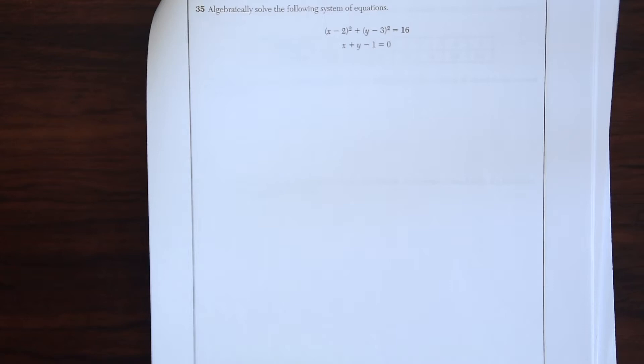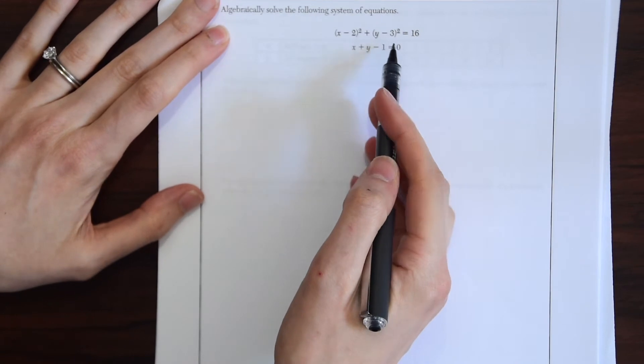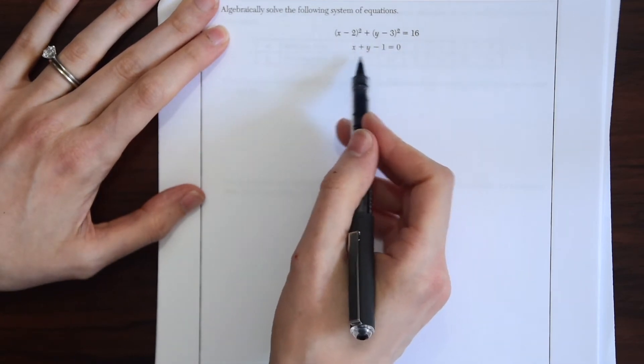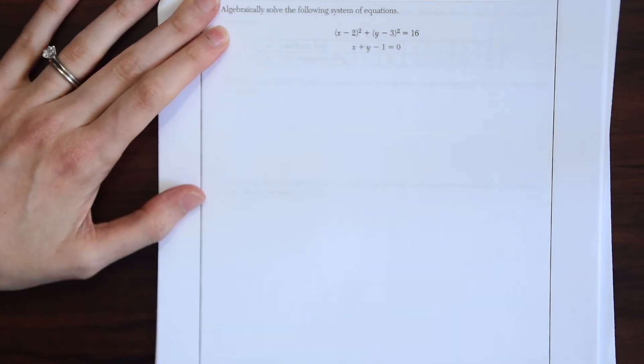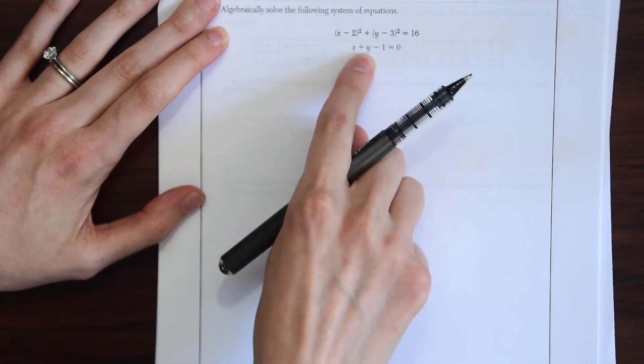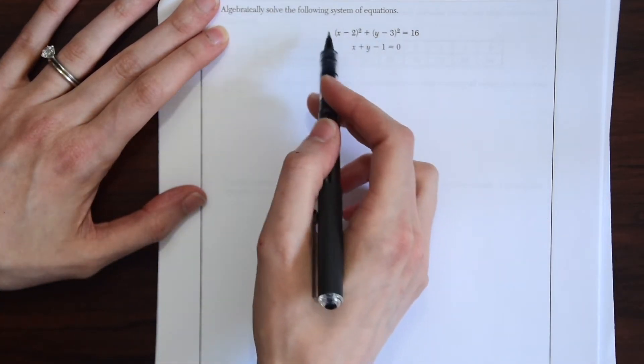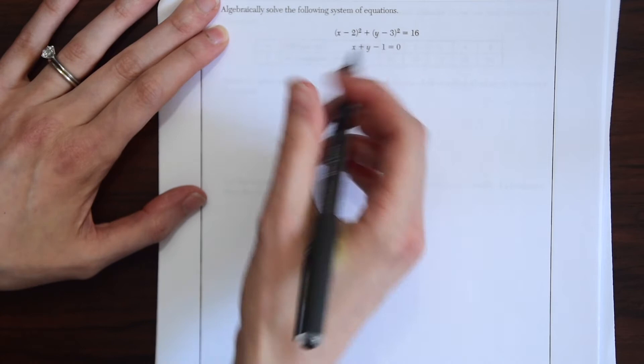Algebraically solve the following system of equations. So we have this big guy over here x minus 2 squared plus y minus 3 squared equals 16 and then this little guy x plus y minus 1. So when I see this I see that we're kind of going to move this little guy around to get in terms of x or in terms of y and plug it into here. But first let's expand this big guy up here.